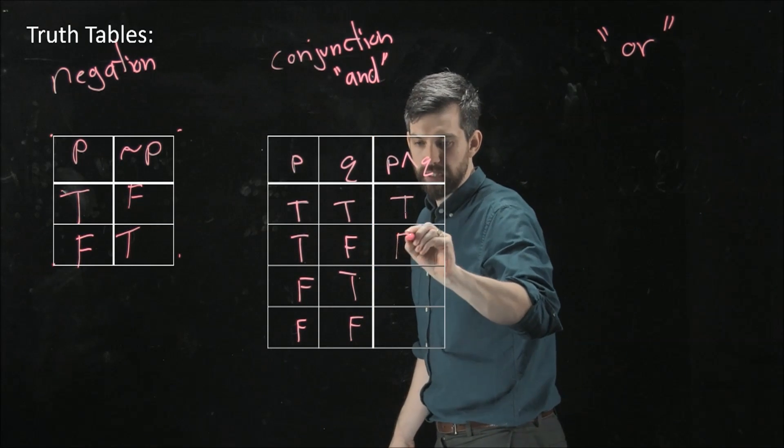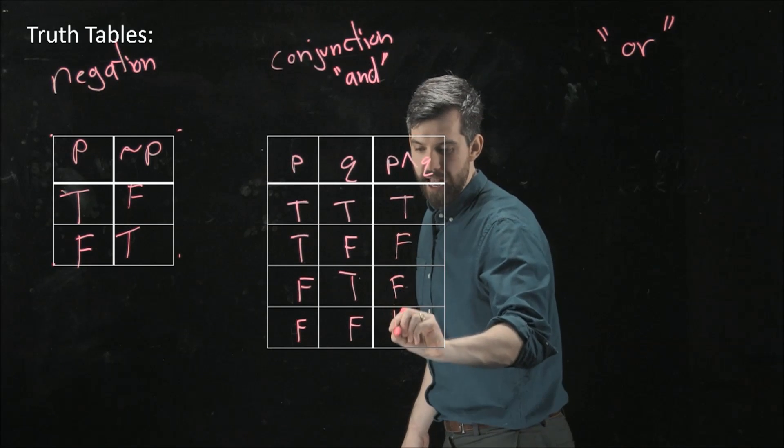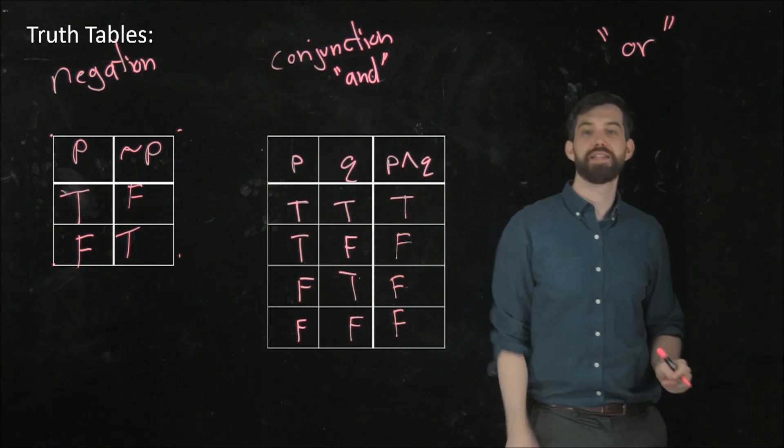But down here, one of them is false, one of them is false, and in this case both of them are false. And so I fill in my table like that.